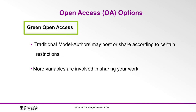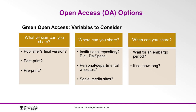Another option is called green open access, where authors publish using the traditional model but may post or share it according to certain restrictions. There are a lot of variables involved. What version of your work can you share? A: the publisher's final formatted version; B: the final peer-reviewed version you submitted to the publisher, the post-print; or C: the earlier version you originally submitted for consideration, which has not yet undergone peer review, or the preprint.